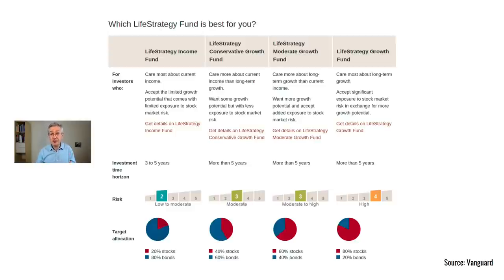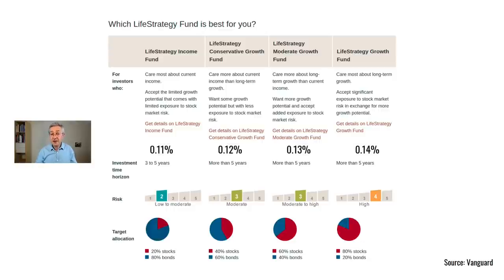Again, it's risk-graded, going from 20% equity up to 80%. Notice that there's no 100% equity portfolio — if that's what you want, you just go for a global equity tracker. And if you want to learn more about global equity trackers, I've also made a video about that. The fee for these US Vanguard funds is significantly lower than in the UK, between 0.11% and 0.14% per year.